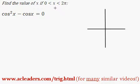Find the value of x if x is in between 0 and 2π. cos²x - cos x = 0.